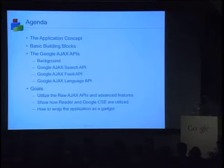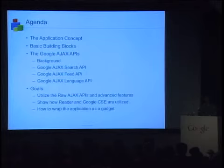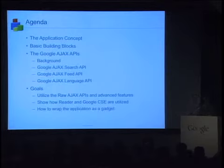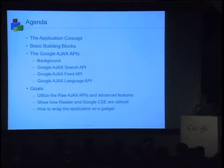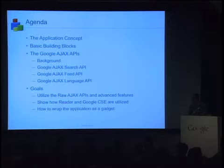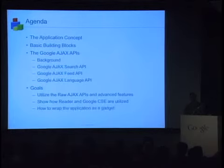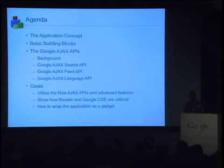We'll talk about the basic building blocks — what we actually used to build the application. It's not only the Ajax APIs; other Google technologies are used. We'll go into the background of the Ajax APIs, why they exist, and then talk specifically about the three main components: search, feeds, and the language API. The goals of the talk are to give you an understanding of how you'd actually go about building such an application, turning it into an iGoogle gadget, and understanding the APIs at both a low and conceptual level, including some of the more advanced and raw low-level features.